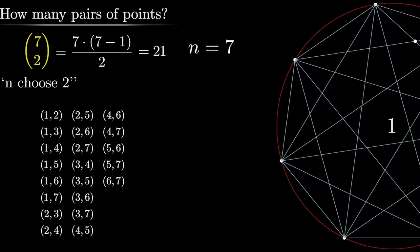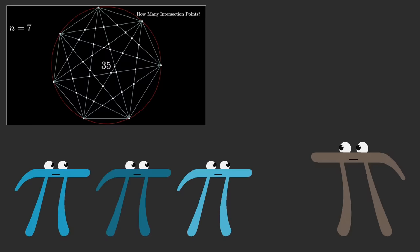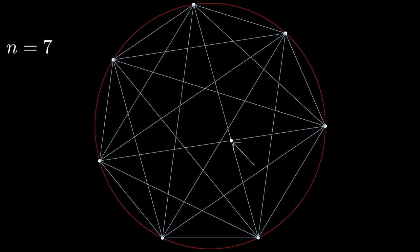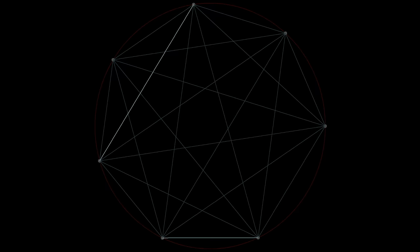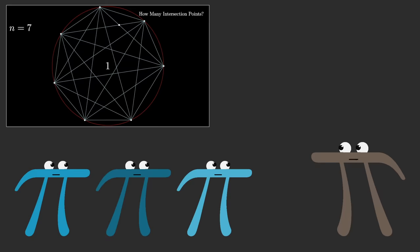Counting the number of intersection points in the diagram is a little bit trickier. One idea might be that it should be the number of pairs of chords, since every intersection point comes from two different chords. However, that would not quite be right because the association is not unique. You can find a pair of chords that don't intersect within the circle. As I said, it's a little bit tricky.